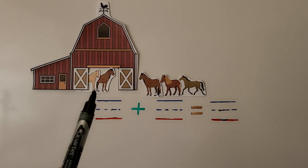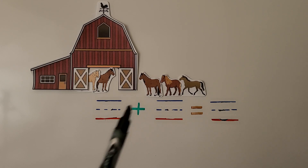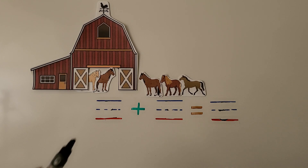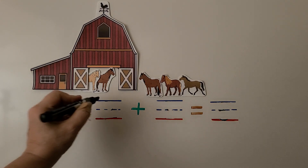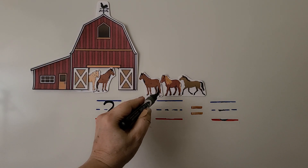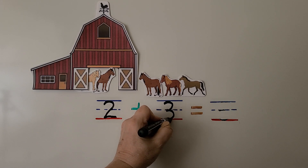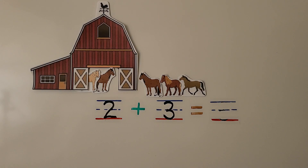Here we have a barn and some horses. Two horses are in the barn. Three more horses come to the barn. How many horses are in the barn now? We can count them in the barn: one, two — and we write the number two. Three horses come: one, two, three. Write the number three. We can add the horses by putting the numbers together, acting out the addition problem by counting all the objects in both groups.